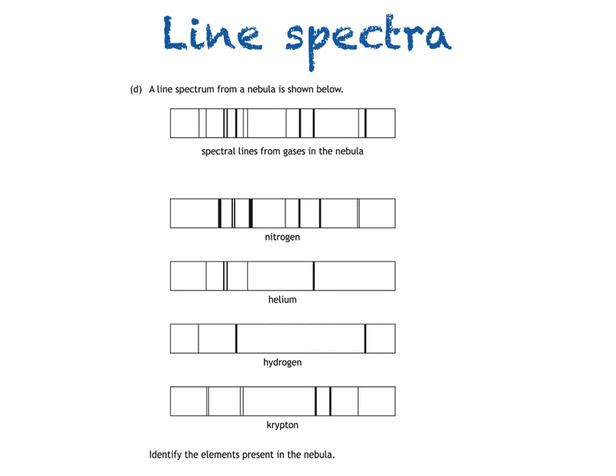The diagram also shows the line spectra from four elements: nitrogen, helium, hydrogen, and last but not least, krypton. We're then asked to identify the elements present in the nebula.